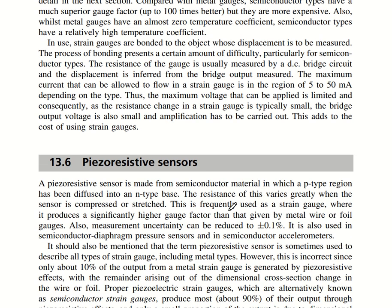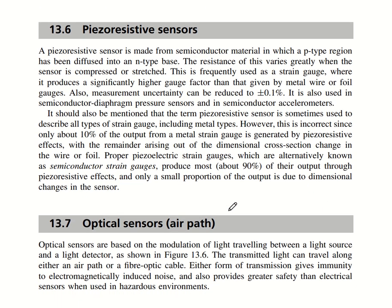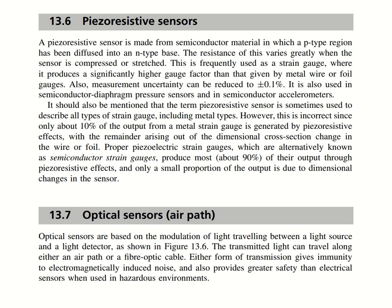Strain gauges are bonded to the object whose displacement is to be measured; bonding presents some difficulty, particularly for semiconductor types. The resistance of the gauge is usually measured by a DC bridge circuit and displacement is inferred from the bridge output. The maximum current allowed to flow is in the region of 5 to 50 milliamperes depending on the type. Since resistance change is typically small, bridge output voltage is small and amplification is required, which adds to the cost.